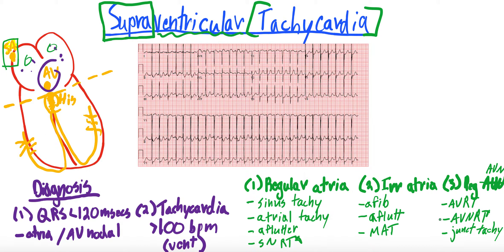It can sometimes be difficult to differentiate these subtypes. There are subtle EKG findings, and sometimes you really can't differentiate them unless you slow the rhythm down to see if your P waves are there, if it's regular, irregular, et cetera.